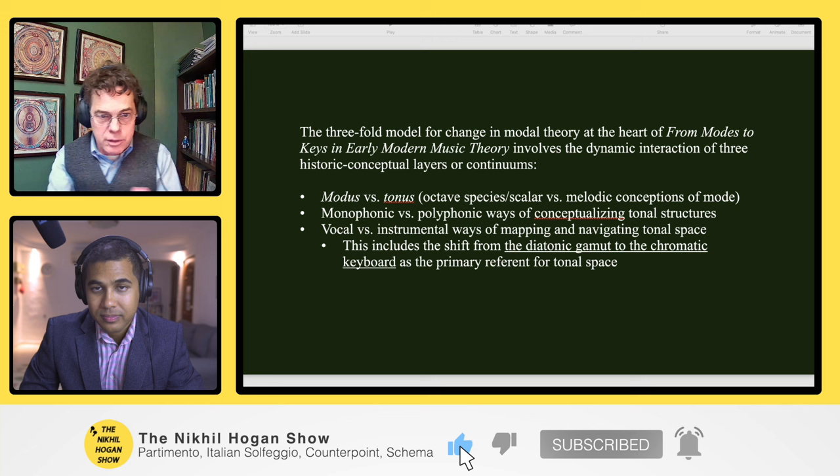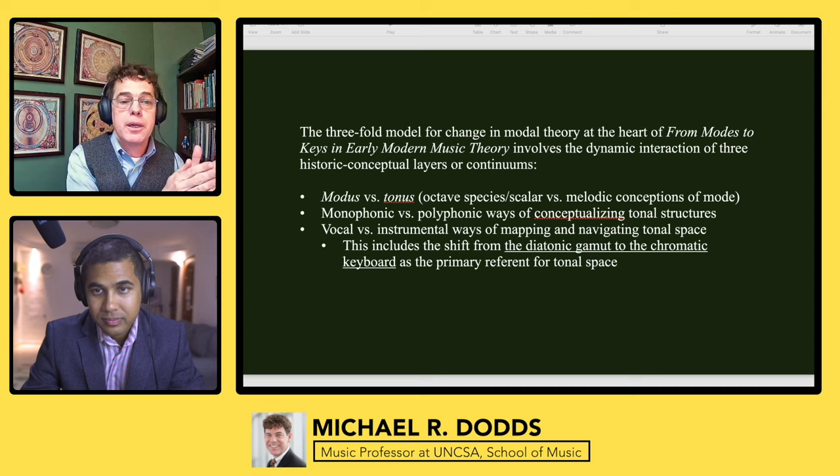Modus is associated with the philosopher; tonus is associated with the churchman, the cantor, the practical musician. Modus tends to be prescriptive in the sense that it's abstract and moves into the particular. Tonus tends to be descriptive — it ends on D, it has a plagal range, and that's what I need to know experientially. So modus and tonus: one is loosely associated with prescriptive and the other with descriptive. That's the Middle Ages.